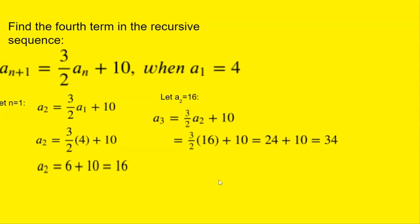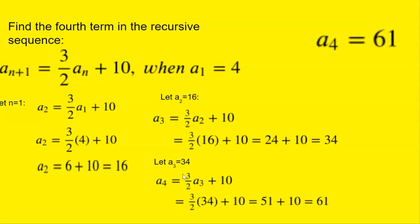Let's use a₃ to find a₄. We have (3/2)a₃ + 10. Since a₃ is 34, 3/2 of 34 is 51, and 51 plus 10 is 61. So a₄ = 61.